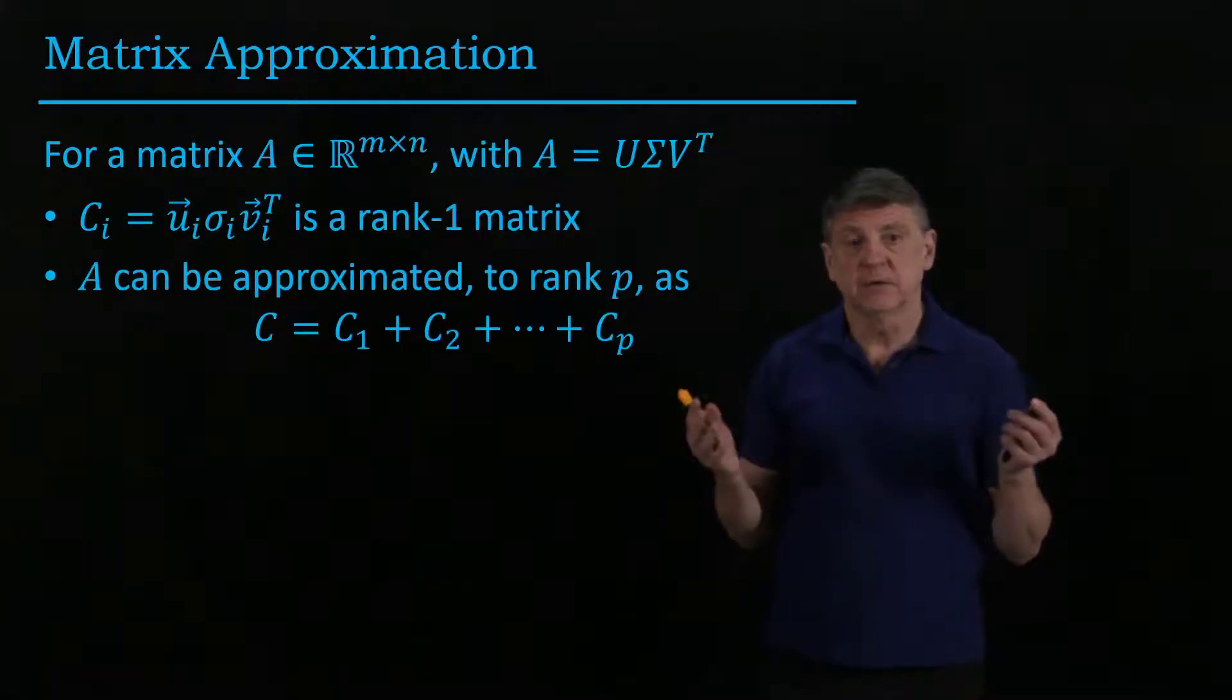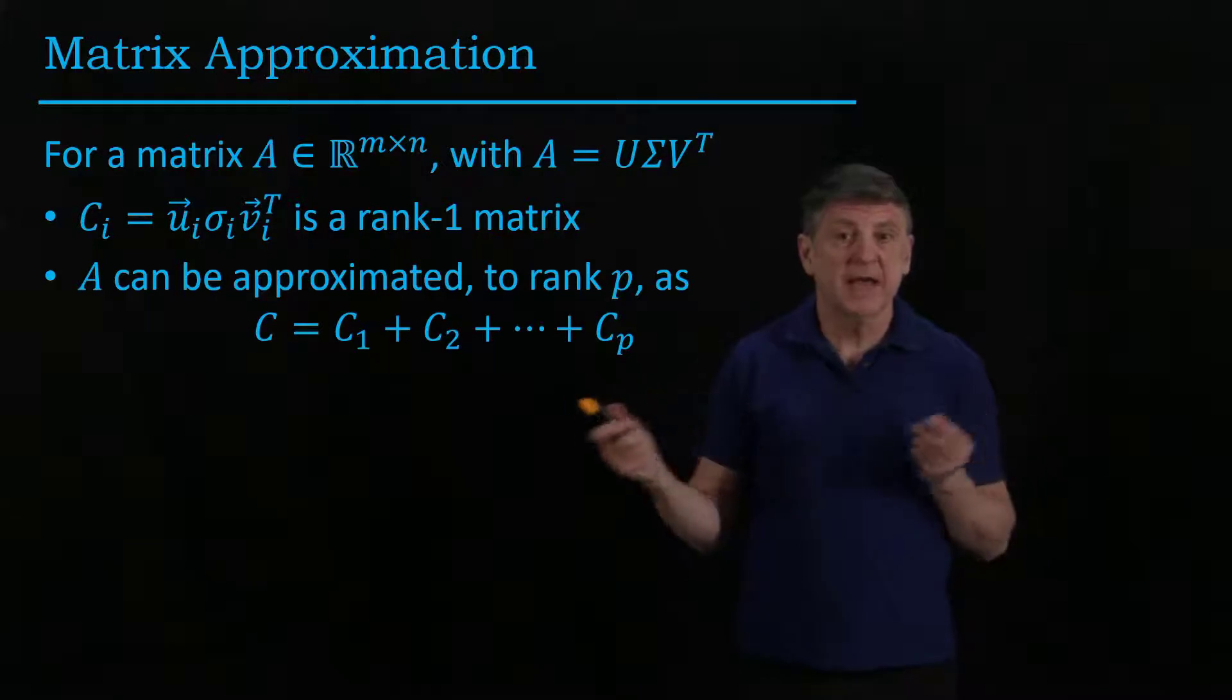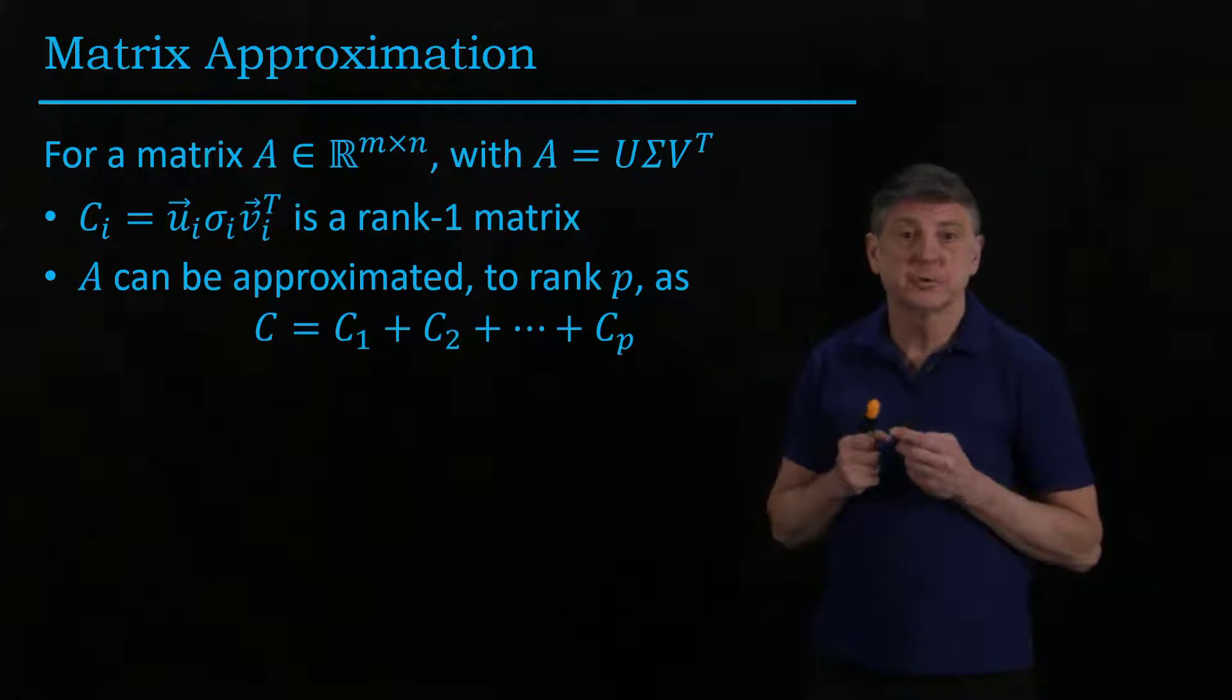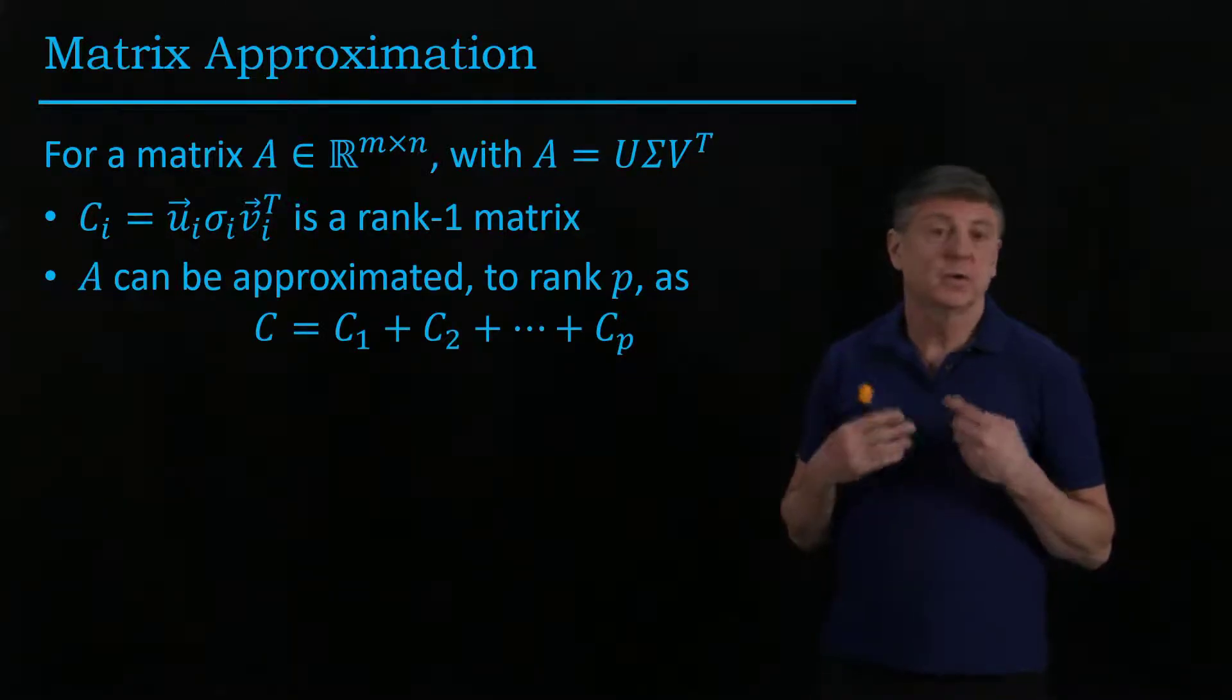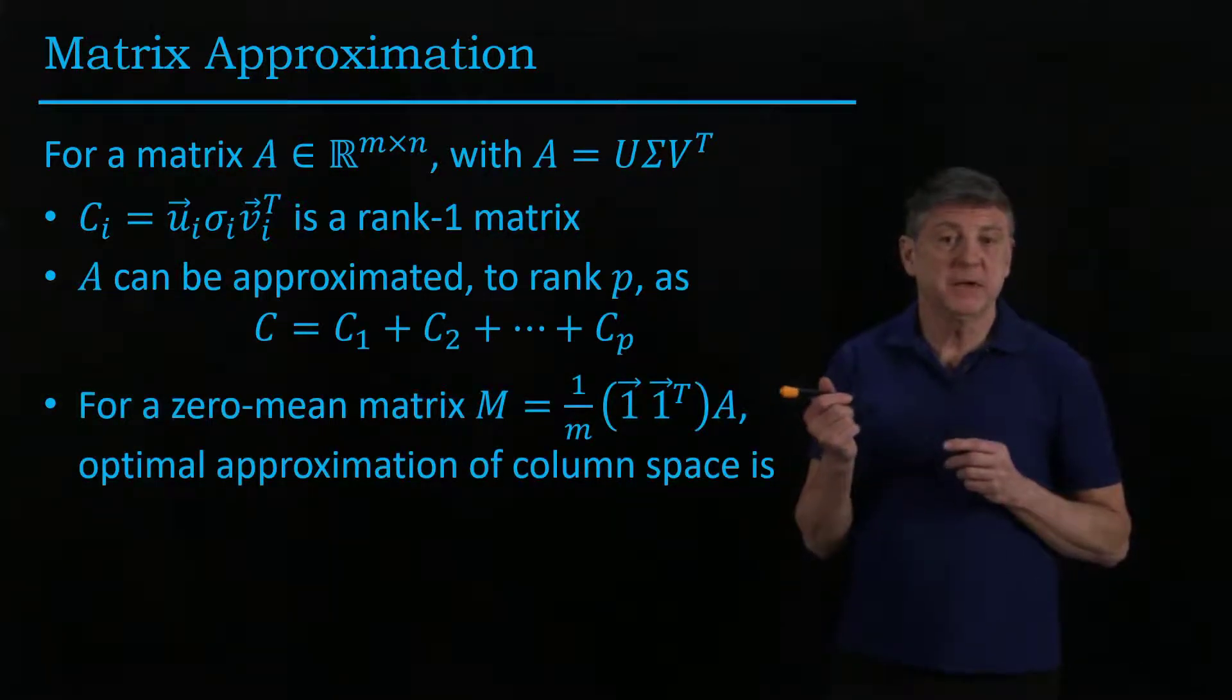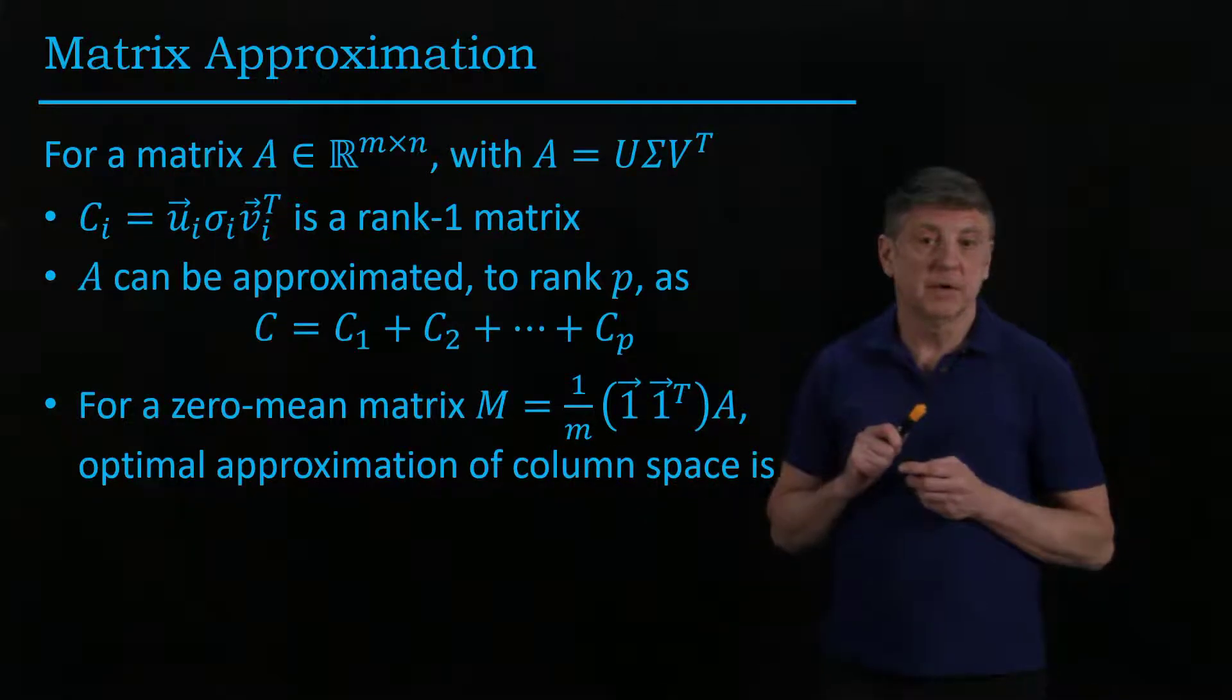Normally in linear algebra, what we see is a decomposition, which is a product. And here we have a series, which is quite unusual. And this is sometimes referred to as the Eckart-Young series, or the Eckart-Young approximation, or the Eckart-Young theorem. So for a zero-mean matrix, which is what we usually have, this, by the way, is completely incorrect.